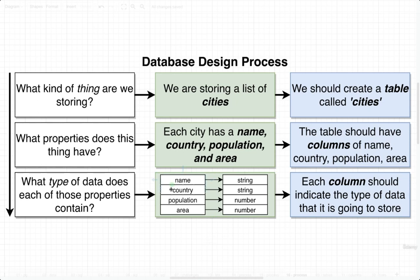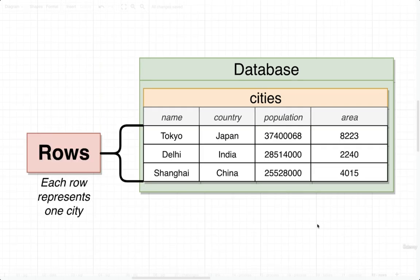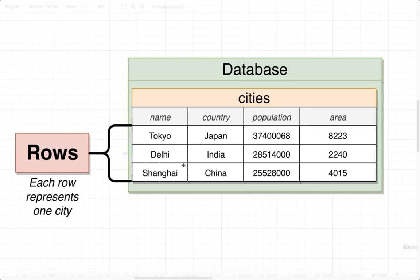Each of those different columns are going to store a specific type of information. Name and country are going to store strings, and population and area are going to store numbers. Once we set up this table and the four columns inside it, we can start to add data. We will add in cities such as Tokyo, Delhi, Shanghai, and so on. Each of these individual cities that we add into this table we refer to as rows. Right now, the cities table has three rows: one for Tokyo, one for Delhi, one for Shanghai.